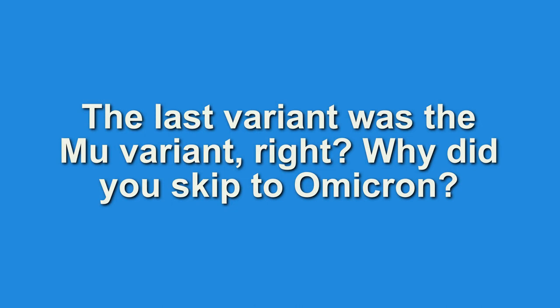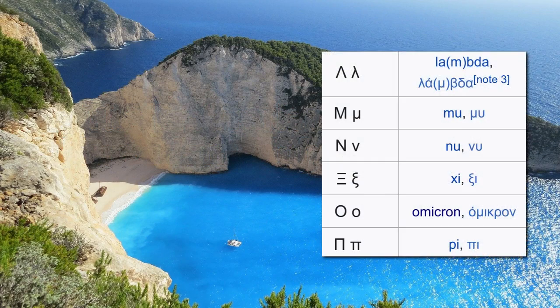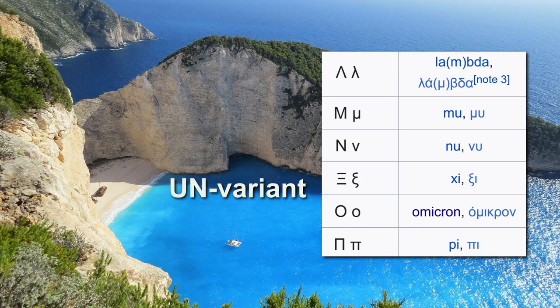The last variant was the Mu variant, right? Why did you skip to Omicron? That's simple. In the Greek alphabet, after Mu comes Nu. If we named the new variant the Nu variant, that just sounds silly. Not to mention the fact that dyslexic people often read Nu variant as the UN variant. So we didn't want our parent organisation being unfairly targeted for creating new variants — that's our job. So we skipped to Omicron instead.